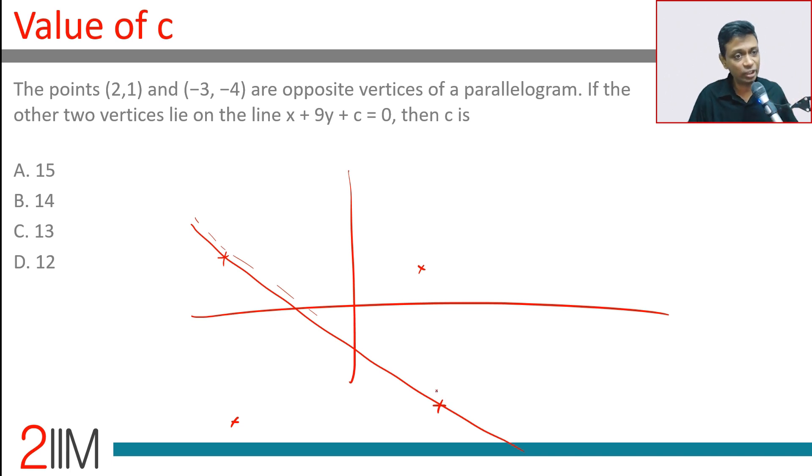That property is: look, opposite vertices of a parallelogram - through that you can draw a diagonal. And the other two vertices lie on line x plus 9y plus c equal to 0. Then remember, through the other two vertices you can draw this line, through this you can draw this line.